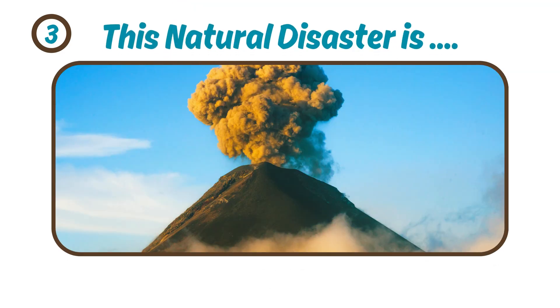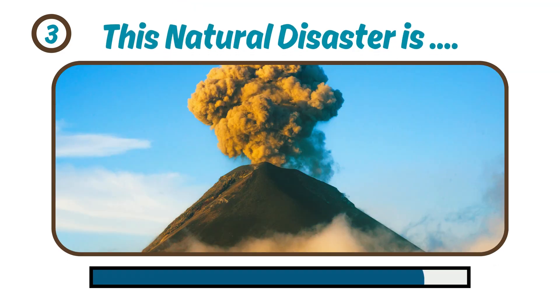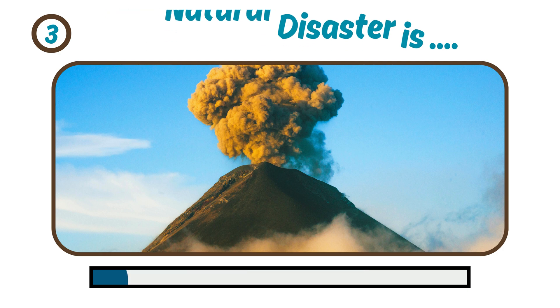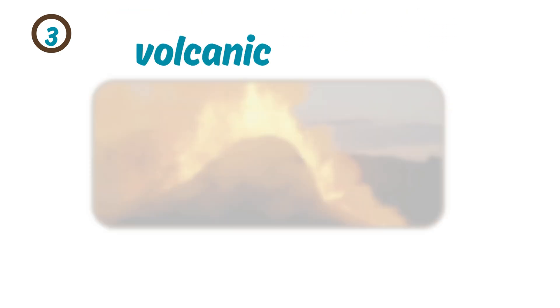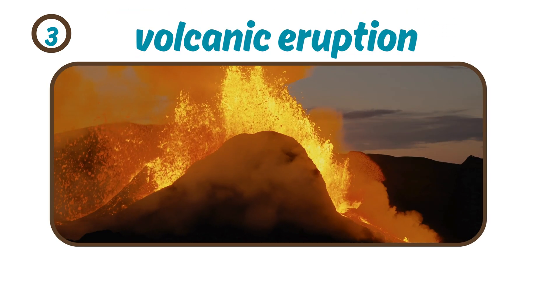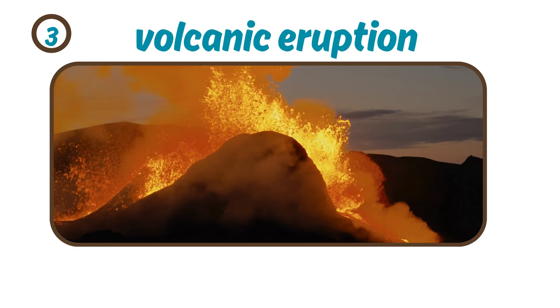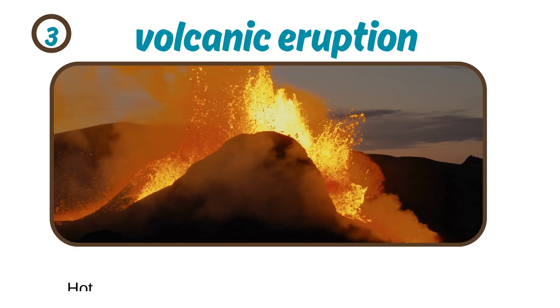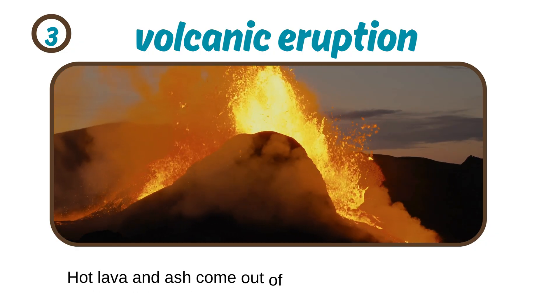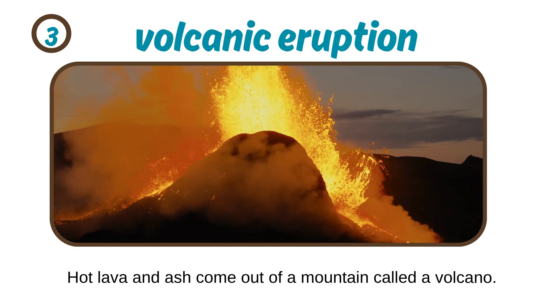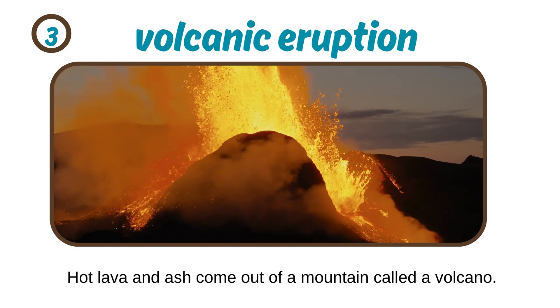This natural disaster is... It is volcanic eruption. Hot lava and ash come out of a mountain called a volcano.